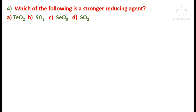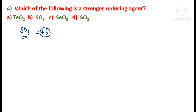Next question: which of the following is a strong reducing agent — TeO₂, SO₃, SeO₃, or SO₂? We are provided with the oxides of Group 16 elements and asked to find the strongest reducing agent. Consider SO₃ first — sulfur in SO₃ is in the +6 oxidation state, its highest state, obtained after losing all 6 outermost electrons. It cannot lose further electrons, so it cannot be a strong reducing agent.